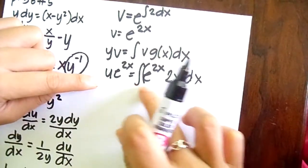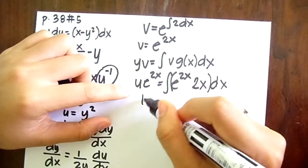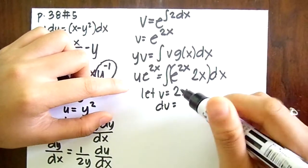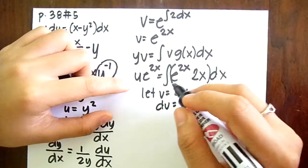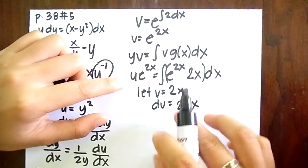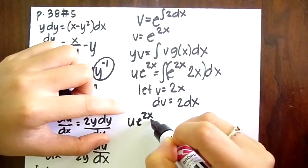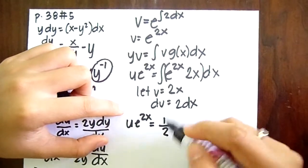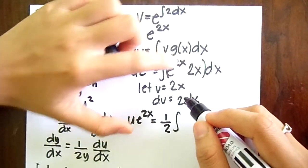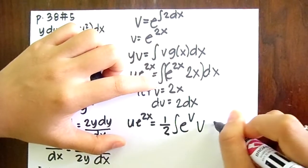So the first thing we do to integrate this term, is we let v equals to 2x, which is dv equals 2dx. So we copy it, and it becomes u e to the 2x equals 1 half integral of 2x becomes v, so it becomes e to the v times dv.